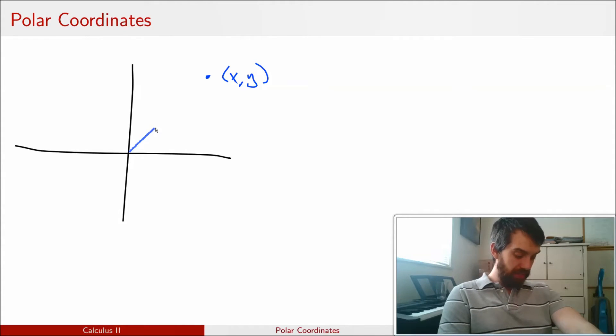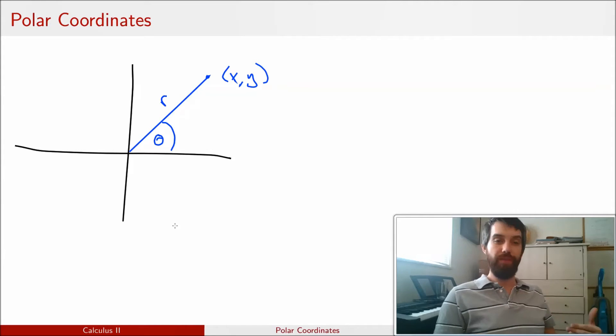One of them is the distance from the origin out to the point. I'm going to call this distance R. And the other piece of information I could give you is what the angle, with respect to the positive portion of the X axis is, I can give you that theta value.